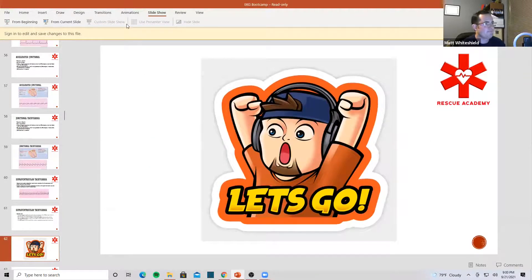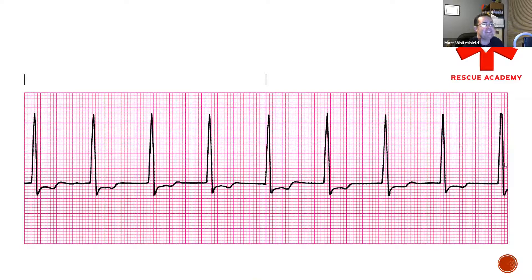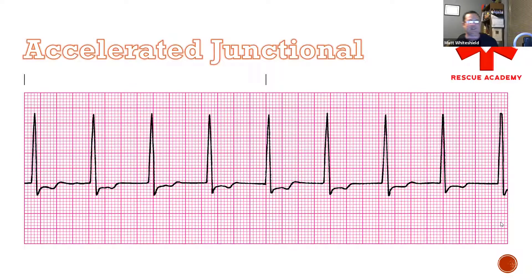What do you guys see here? We got no P-waves. What's the rate? We count 9 total R-waves, which makes us at a rate of 90. Accelerated junctional. You have to know the speeds at which the name changes — if it's 60 to 100, it's considered accelerated.